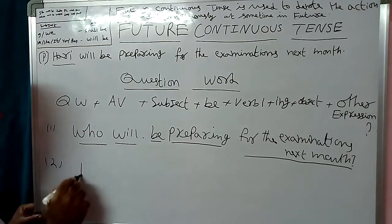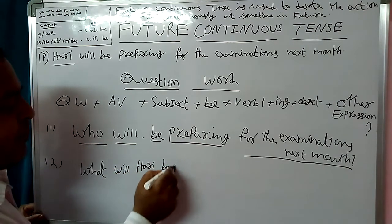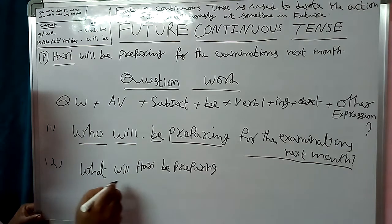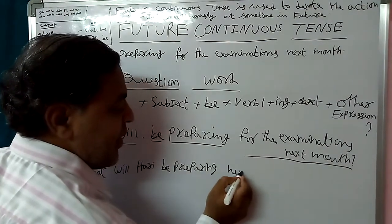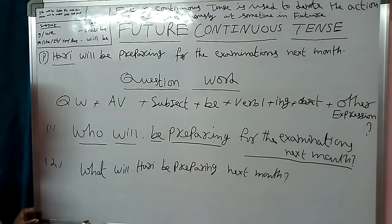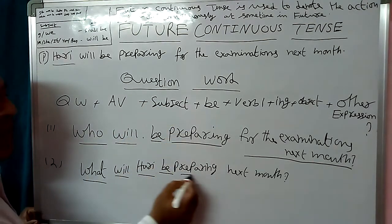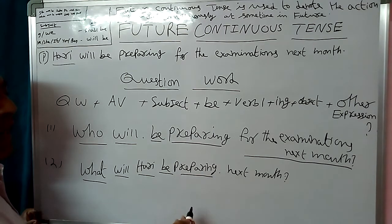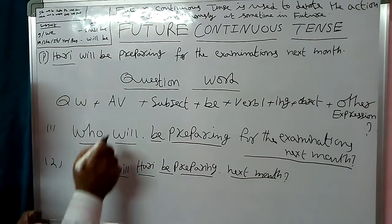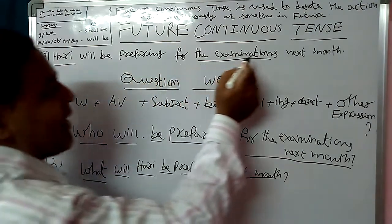What will Hari be preparing for? Structure: What (Question word) + Will (Auxiliary) + Hari (Subject) + Be + Preparing (Verb 1 + -ing). Here the object is not written because the object is the answer. Answer: For the examinations. Hari will be preparing for the examinations.